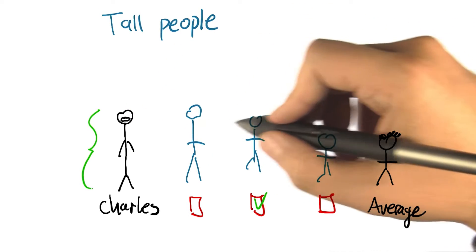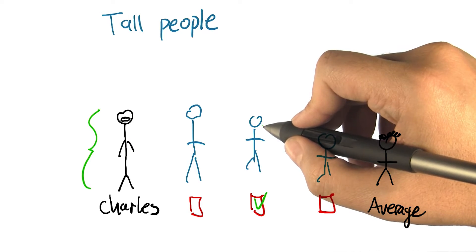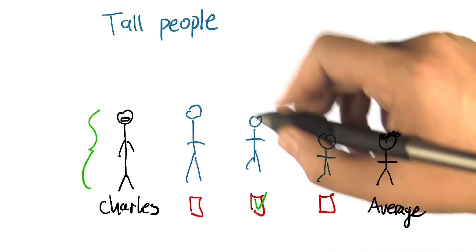Very tall people like you tend to have taller than average children, but the height is between. It actually regresses to the mean.